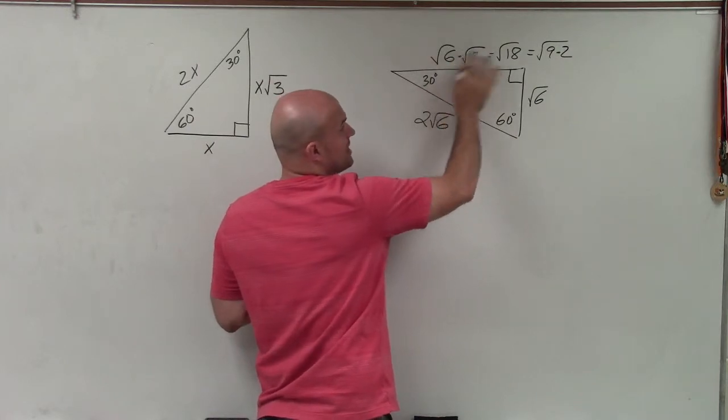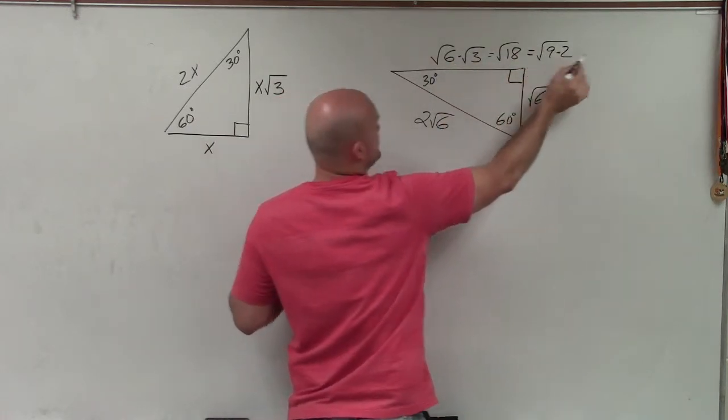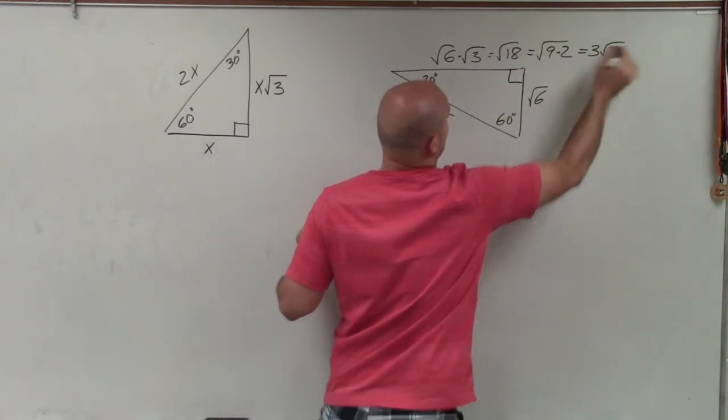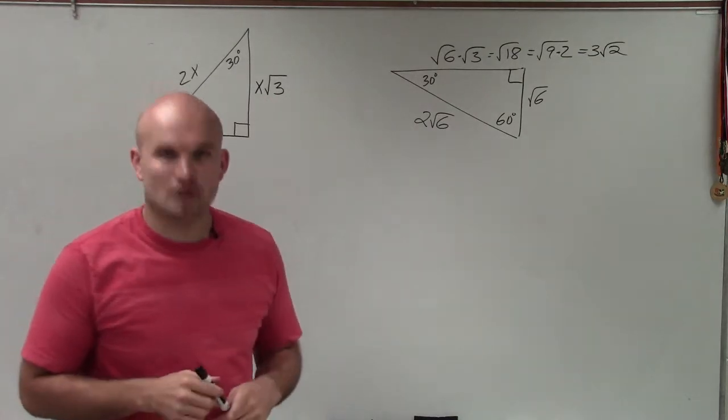Square root of 6 times square root of 3, you multiply the radicands, give you square root of 18. I can rewrite square root of 18 as square root of 9 times 2. And I can take the square root of 9, which is 3, but I cannot take the square root of 2. So that would be my final length of my long leg.